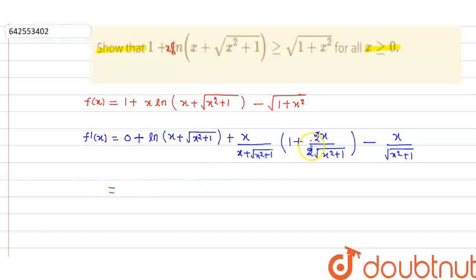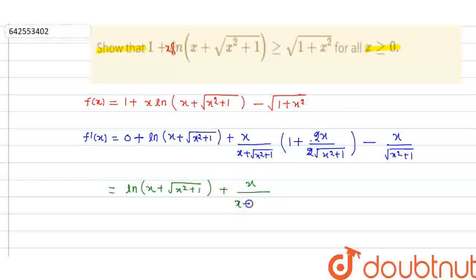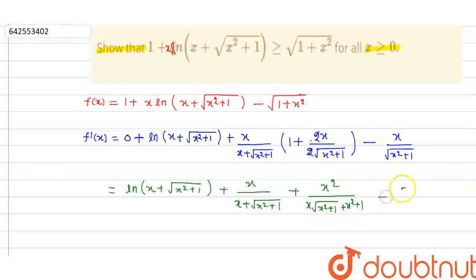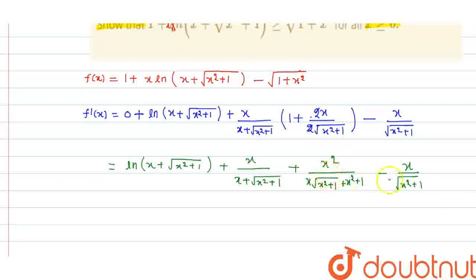Further solving, we get ln(x + √(x²+1)), and then multiplying out the bracket, we get x upon √(x²+1), plus x², over x·√(x²+1), becoming (x²+1) in the numerator, minus x upon √(x²+1).